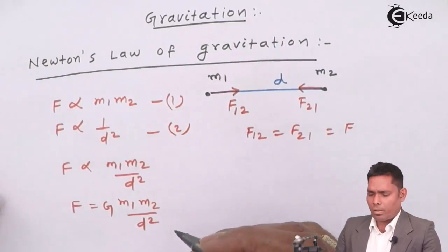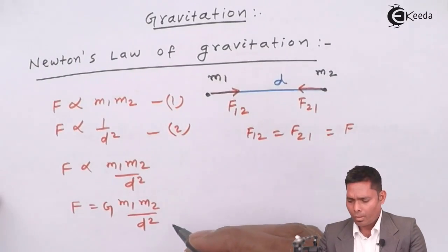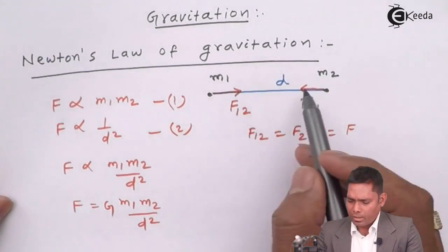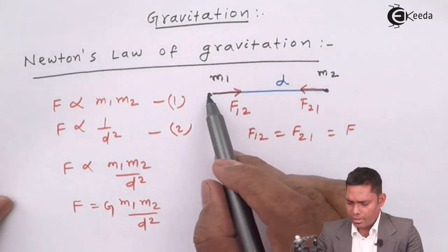This is inverse square law. This law is also known as inverse square law. And in terms of vector you can see that this is directed at this side and this is at opposite side.